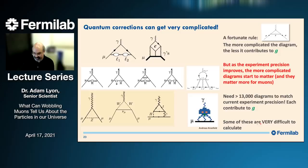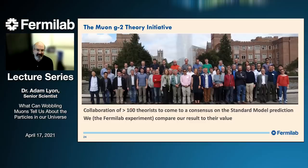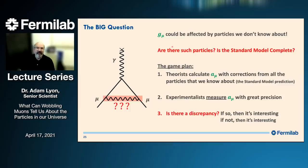Some of these diagrams are very difficult to calculate, and there's quite an industry behind doing this. In fact, the theorists themselves have their own collaboration now — only a couple of years old. There have been many theory groups calculating parts of G-minus-two, and they formed their own collaboration to come to a consensus, putting together all their different approaches and arriving at one number for the standard model prediction that they can all agree on. That's the value the Fermilab experiment will compare to — we no longer choose which theorists to follow.